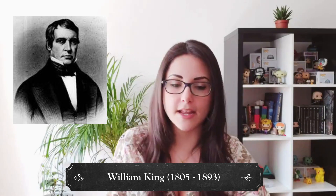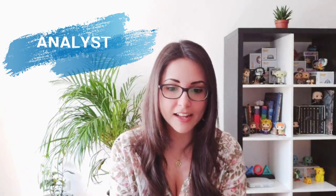Ada married William King, who was made Earl of Lovelace in 1838. Ada thereby became Countess of Lovelace — that's why we call her Ada Lovelace. Ada described her scientific approach as 'poetical science' and herself as an analyst and metaphysician.